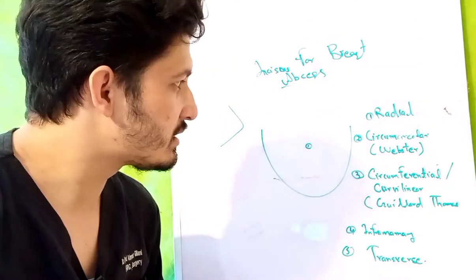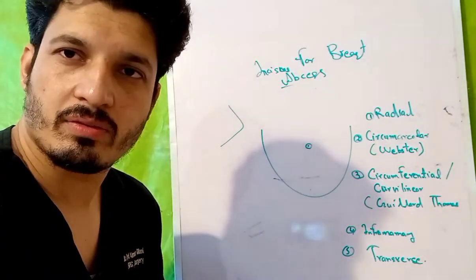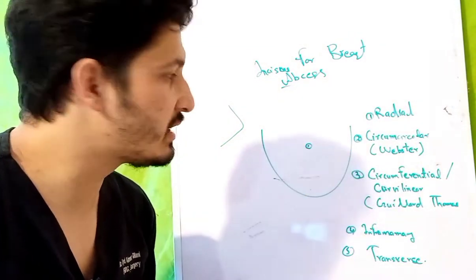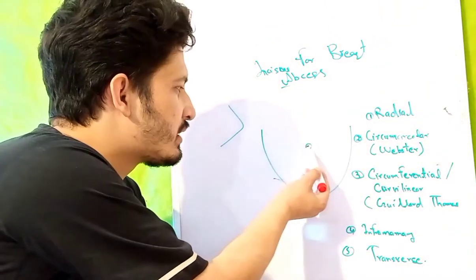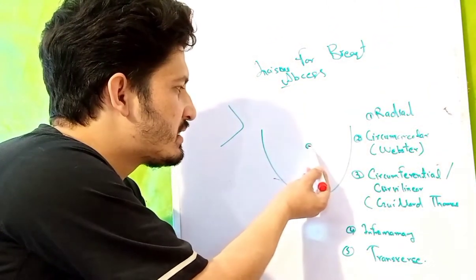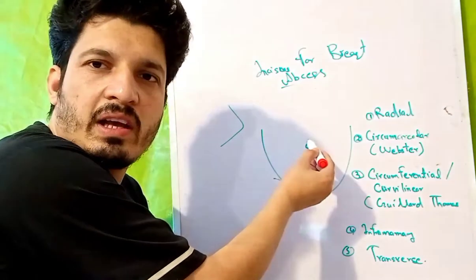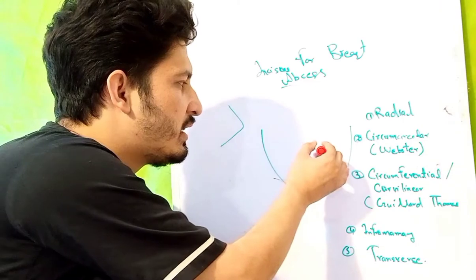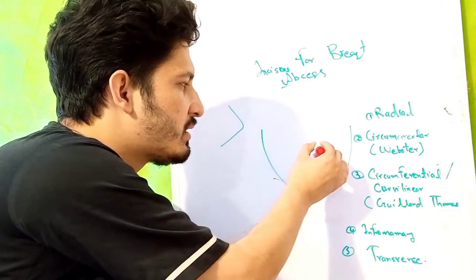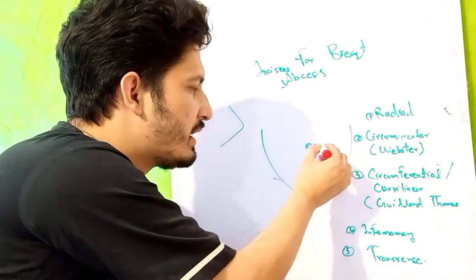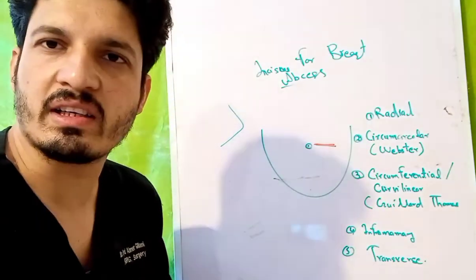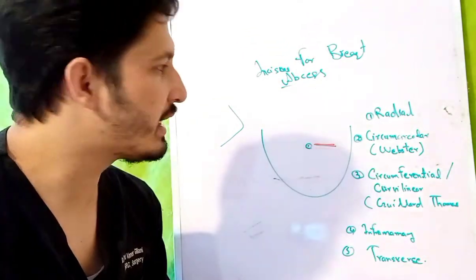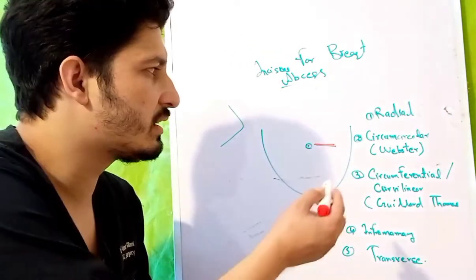I am going to mark all the incisions for the breast abscess. The first incision is the radial incision. This is your nipple, this is the areola, and this is the nipple-areola complex. The radial incision starts from the areola and extends towards the periphery.